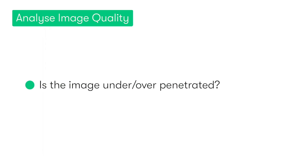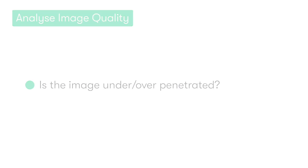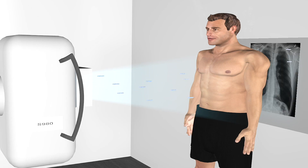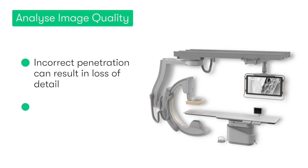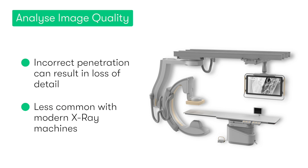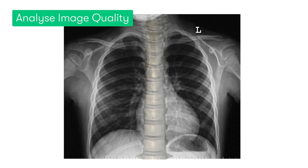Lastly, we want to check to see if the image is under or over-penetrated. Essentially, penetration refers to the degree that the x-ray beams have passed through the body. If the penetration is less than necessary, it can lead to a poorly exposed image in which we have significant loss of detail. With modern digital x-ray machines this is much less of an issue than it used to be, but it's still important to check. In a well-penetrated image, the vertebral column should be visible just behind the heart — which, as you can see, is definitely the case in our image. So all in all, we can say that we're very happy with the quality of this image.